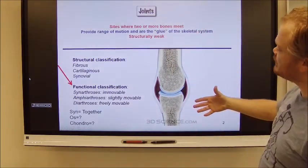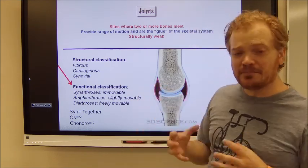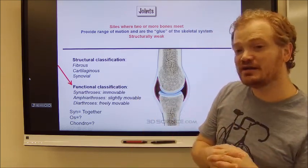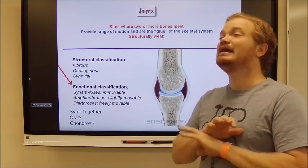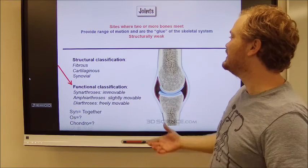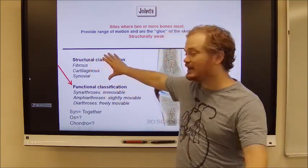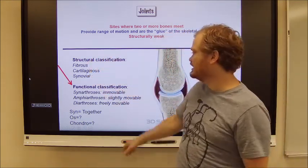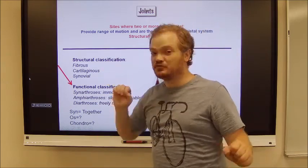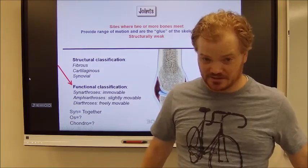Generally speaking, what we're dealing with here are areas where two or more bones come together and join with one another. That could be a solid junction, that could be a mobile junction — it could be all kinds of different things. So we need ways to describe these, and we do it using structural classifications first, and then we further base those into functional classifications. When I get into it, this is going to make perfect sense.